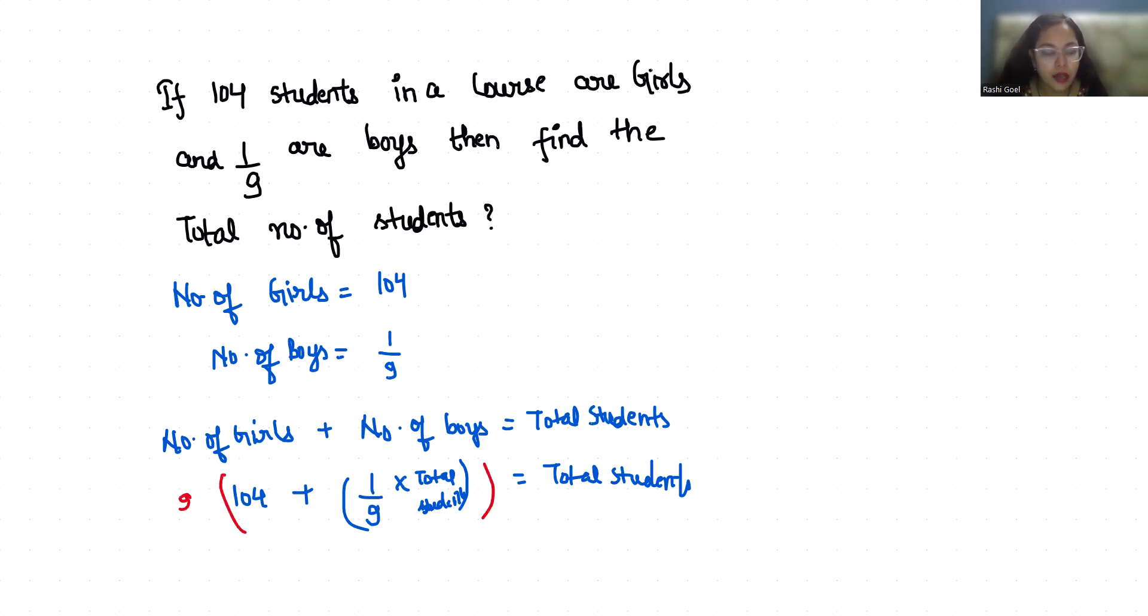So 9 times 104 is 936, plus 9/9 will cancel. Only total students will be left. I am going to denote total students with TS and here 9 times TS. Now I am taking this positive TS to the other side. So 936 equals 9 times TS minus 1 times total students. So 936 equals 8 times total students.